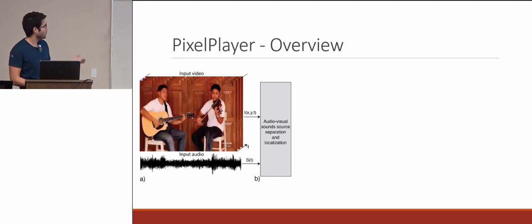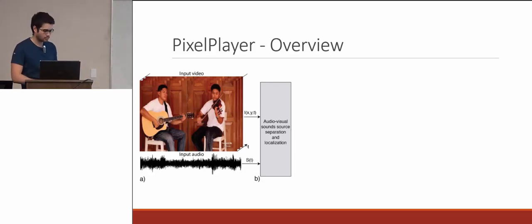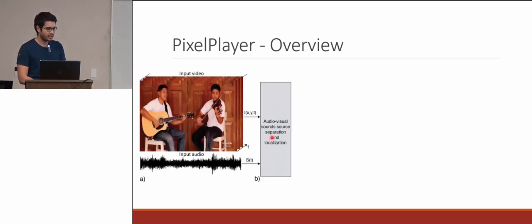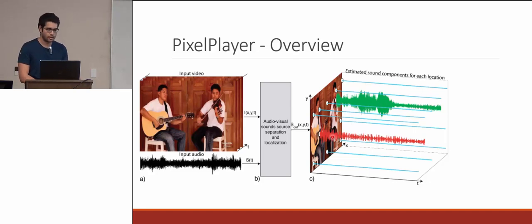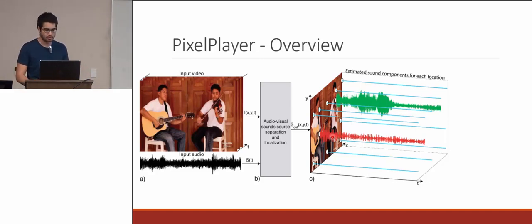They introduced the pixel player, which takes only the frames from the video and the raw audio. This is a high-level view of their entire network, which accepts input from the image and input from the audio, and the output maps every single pixel to a sound. This is an example of 11 pixels — the ones with blue lines are silent pixels, the one in green is the violin, and the one in red is the guitar.